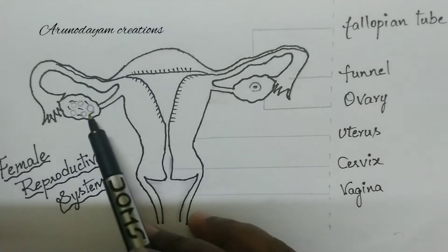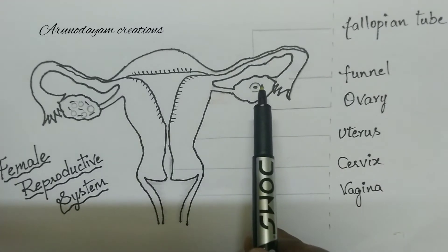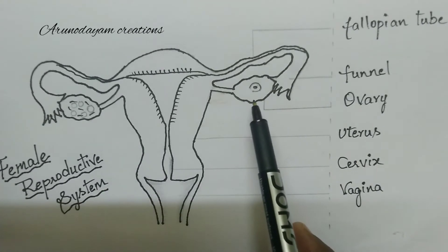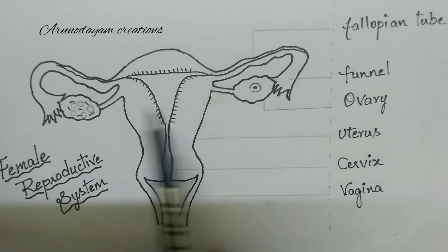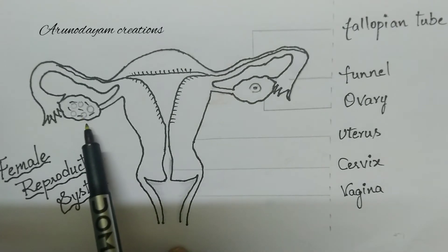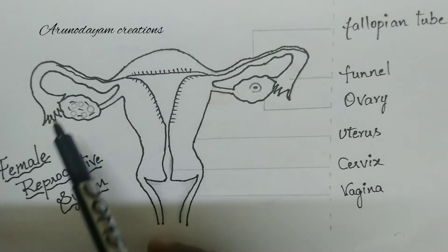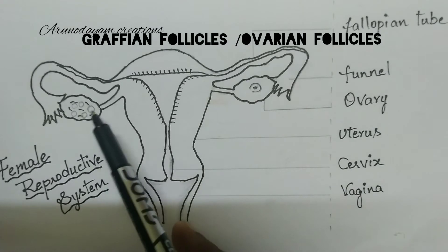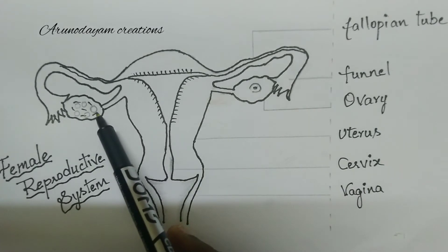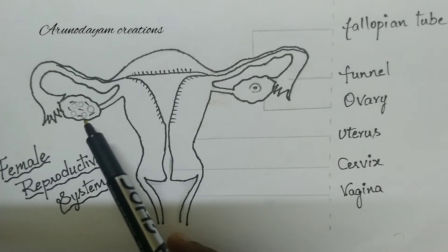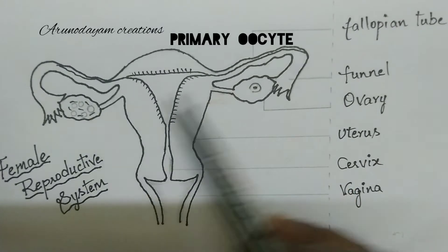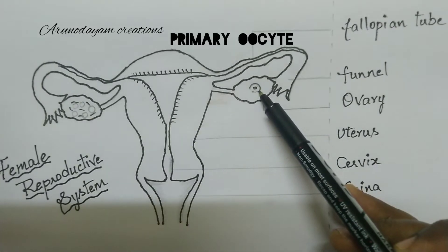A pair of ovaries are present in the female reproductive system. These are egg-shaped structures. These egg-shaped ovaries contain so many cellular bubble-like structures called graafian follicles or ovarian follicles. Each graafian follicle contains a cell called a primary oocyte.